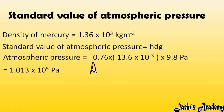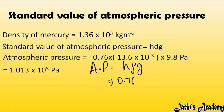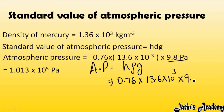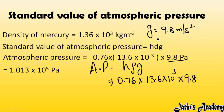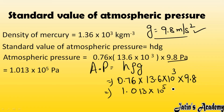Putting the values: h = 0.76 m, density of mercury ρ = 13.6 × 10³ kg/m³, and g = 9.8 m/s². Solving all the values gives 1.013 × 10⁵ Pascal. So the standard atmospheric pressure is approximately 1 × 10⁵ Pascal — this is the standard value of atmospheric pressure we use.